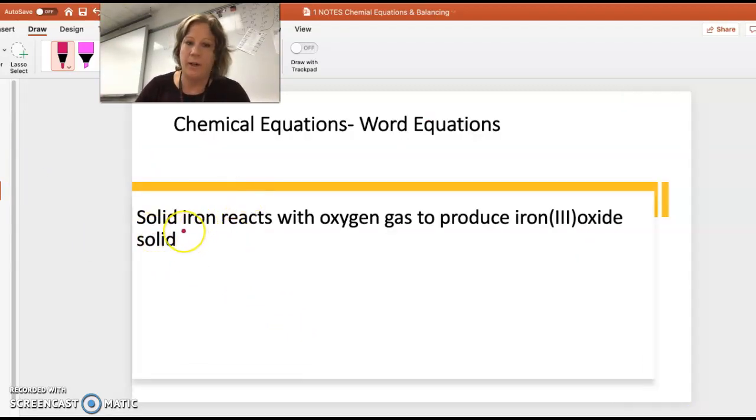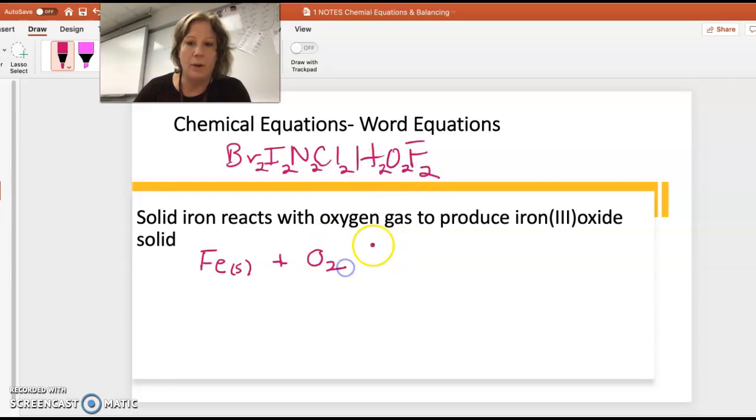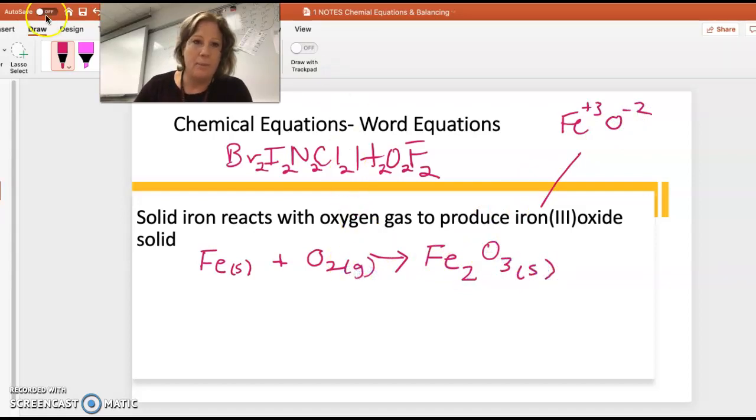Here's taking a word equation and writing it as a chemical equation. Solid iron, Fe(s), reacts with oxygen gas - remember the Brinkelhoff rule that we're gonna be diatomic when they're by themselves - so oxygen is O2, to produce iron(III) oxide. This is plus 3, oxygen's minus 2, so it's Fe2O3 solid. For balancing, we have three oxygens and two, so we want six oxygens on both sides. This becomes six, and we have four irons, so we'd want a four here. We'll go over balancing in much more detail coming up.